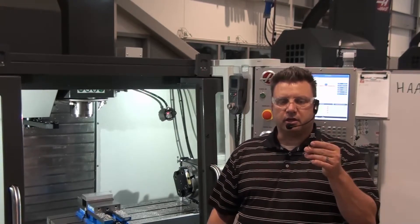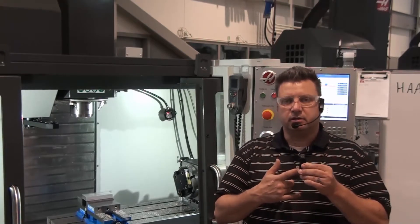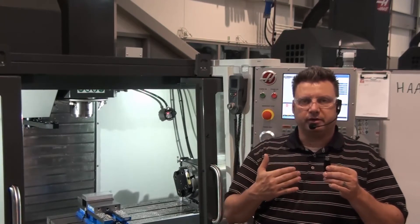Now that we've set our part zero and set all of our tool length offsets, the part is ready to be machined. The one thing that we're missing is our program. Your program will be on a USB drive similar to this. We're going to go ahead and load our program into the machine now.